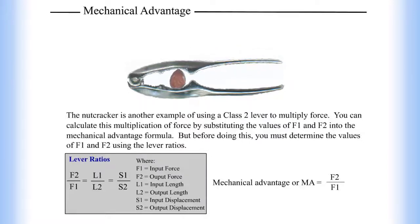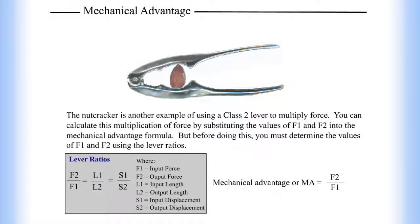F2 equals output force, L1 equals input length, L2 equals output length, S1 equals input displacement, and S2 equals output displacement. Mechanical advantage, or MA, equals F2 over F1.